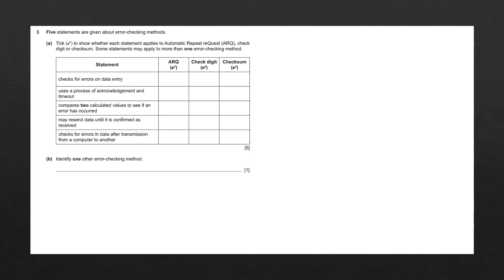Five statements are given about error checking methods. Tick to show whether each statement applies to automatic repeat request, check digits, or checksum. Some statements may apply to more than one error checking method. We have a table with a couple of statements and each of our error checking methods. We're going to go through and discuss each method and draw diagrams to help explain, then answer which statements apply to which error checking method.